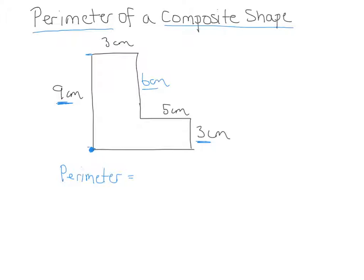The length of this side down the bottom here, if this length is 3 and this length is 5, then the length down the bottom must be 8.